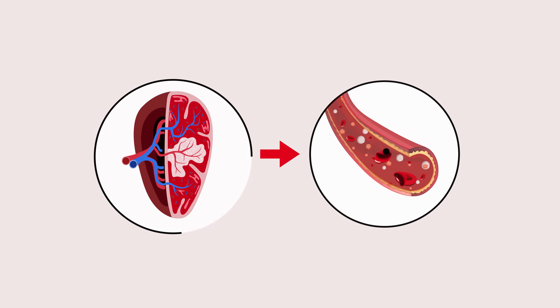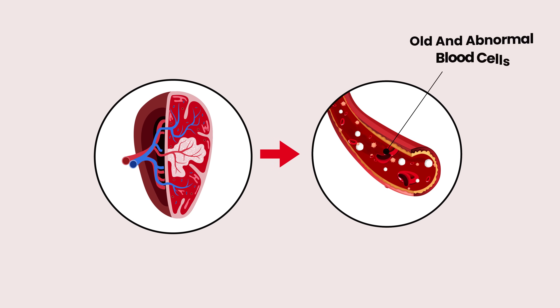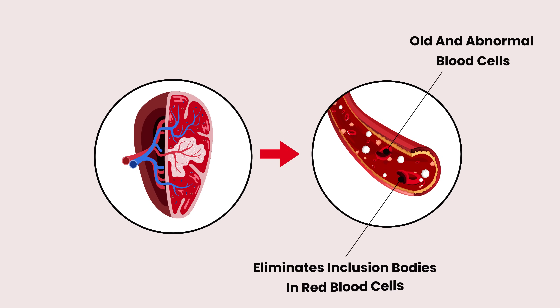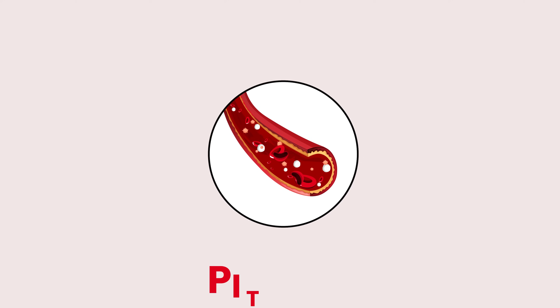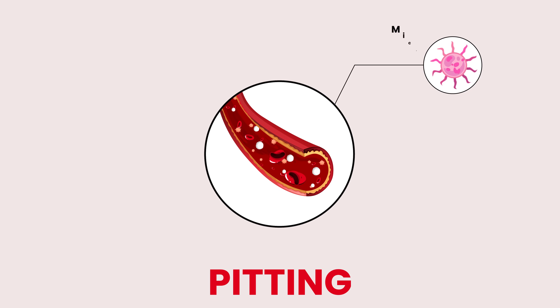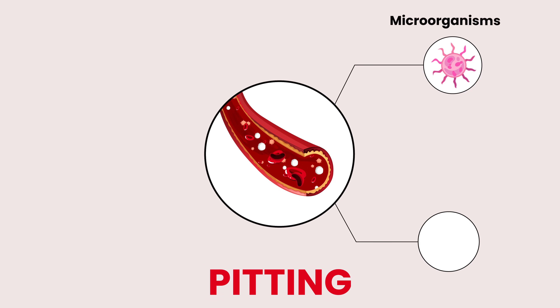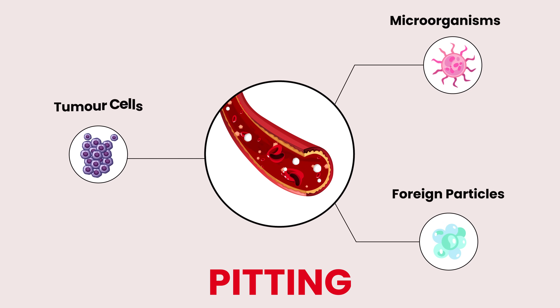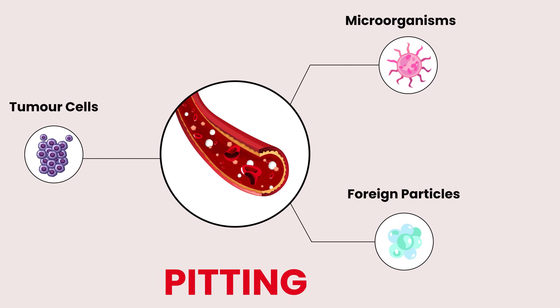It removes old and abnormal cells from the blood, eliminates inclusion bodies in red blood cells in a process called pitting, and removes microorganisms, foreign particles, and tumour cells from the blood.